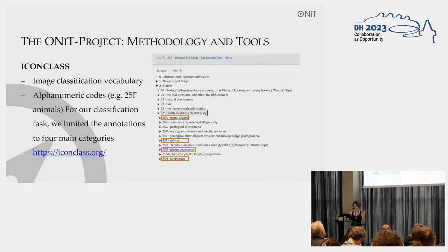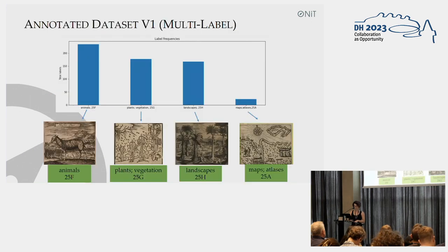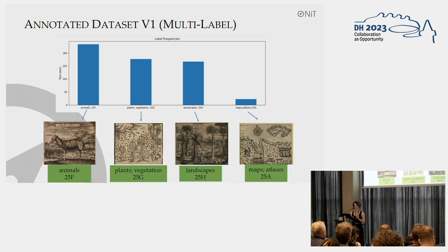Noted on the right side, you can see the four main classes that we agreed to use for this machine learning data set that we have prepared. We decided to limit it to these four classes to make it a simpler machine learning task, also because until now we have annotated a bit more than 400 images — so it's quite a small corpus still — and we plan to annotate more over time.